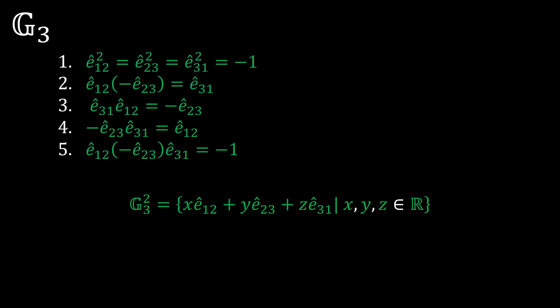We first remember that all unit bivectors square to negative 1. We then notice that if we multiply the 1, 2 bivector with the negative 2, 3 bivector, we get the 3, 1 bivector. Similarly, the 3, 1 and 1, 2 bivectors generate the negative 2, 3 bivector, and the negative 2, 3 bivector pairs with the 3, 1 bivector to make the 1, 2 bivector. Then multiplying all of them out, we get negative 1. So, there's obviously a very unique relationship between these bivectors, but what is it?